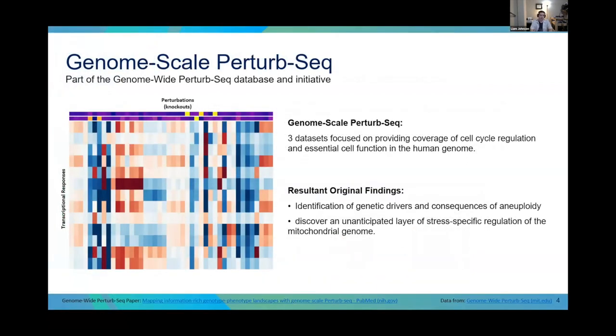The specific dataset that I worked with is much newer, from 2022, called the genome-wide perturb-seq dataset. There are three smaller datasets within it that focus on essential cell function and cell cycle regulation. That study had some original findings, identifying some drivers and consequences of aneuploidy and unanticipated stress regulation responses in the mitochondrial genome.